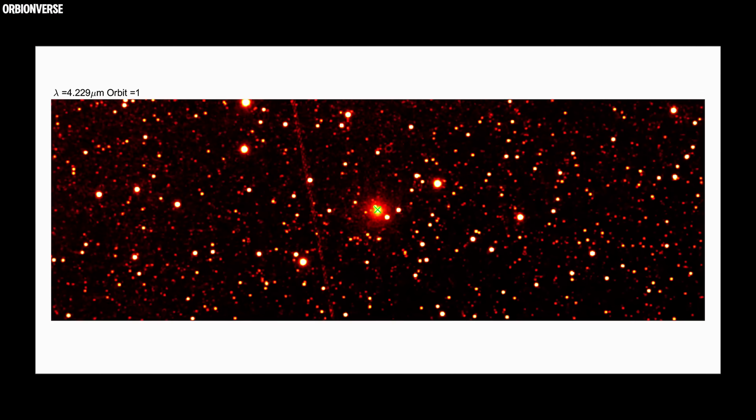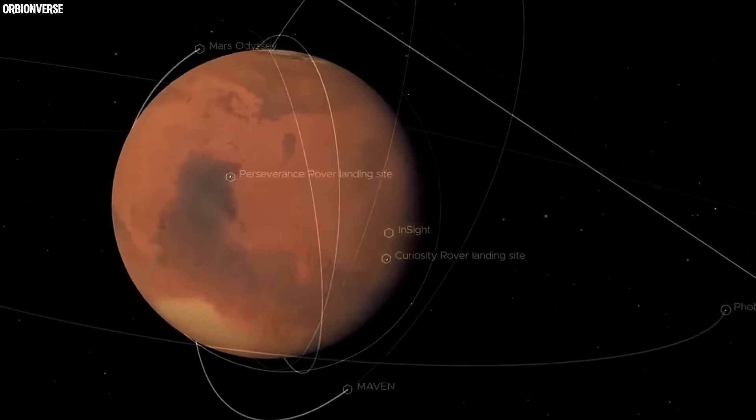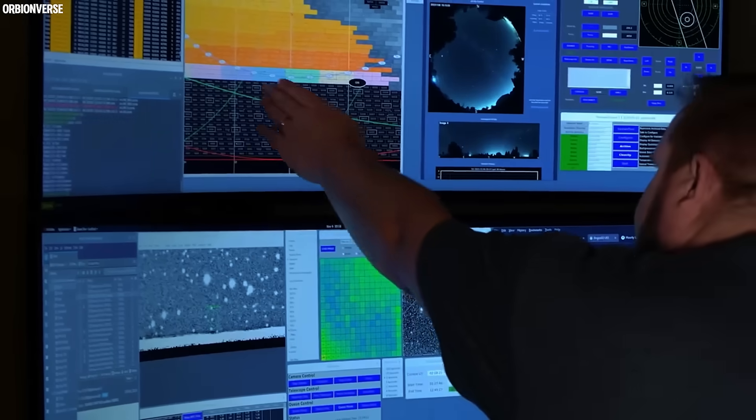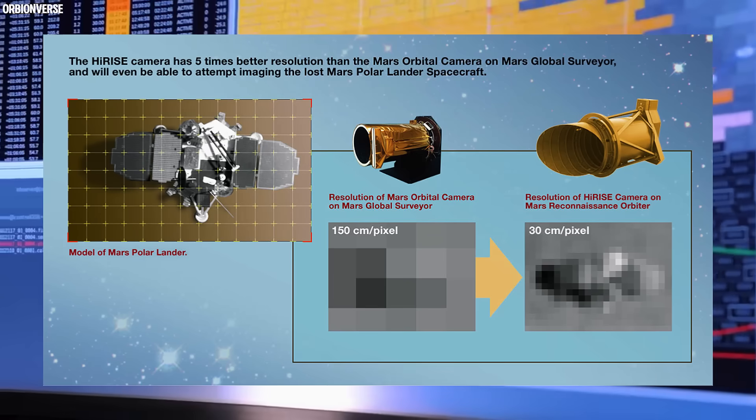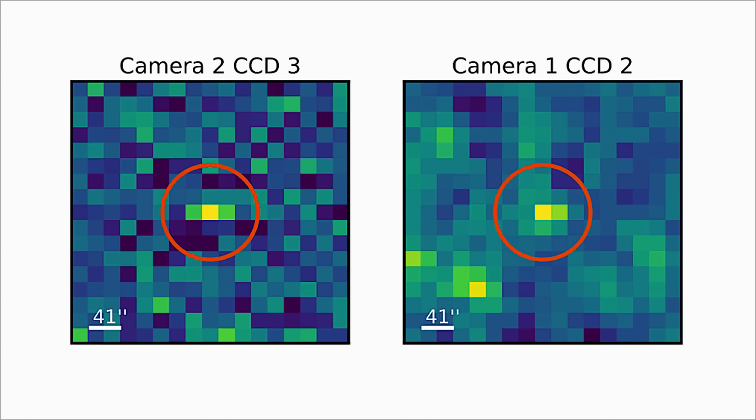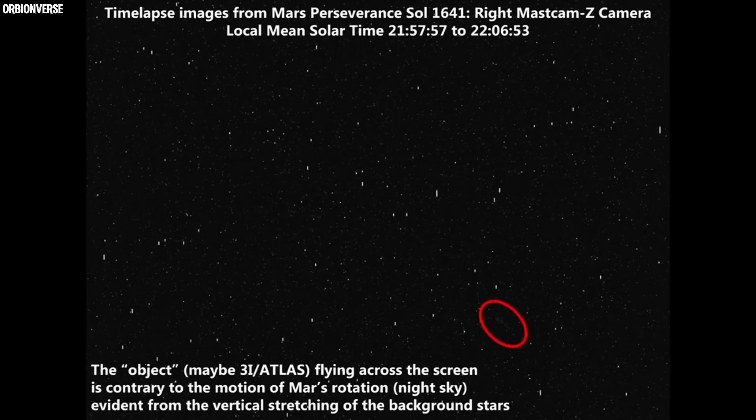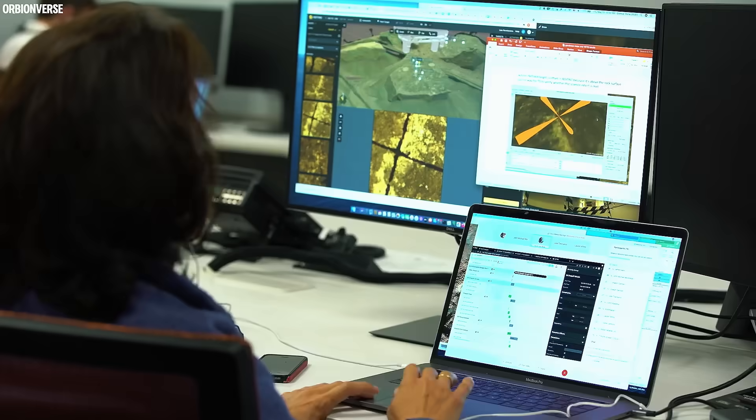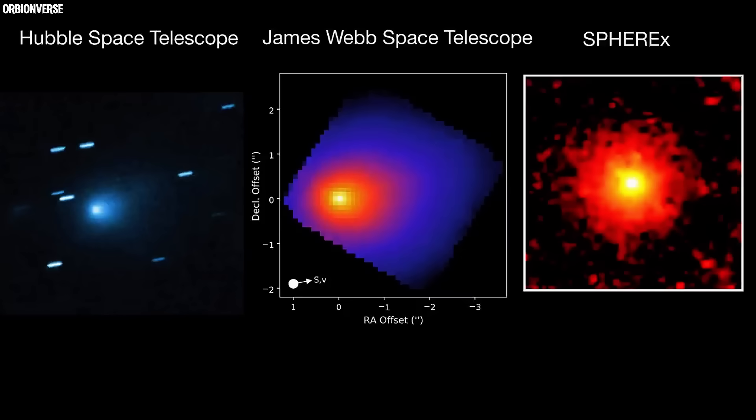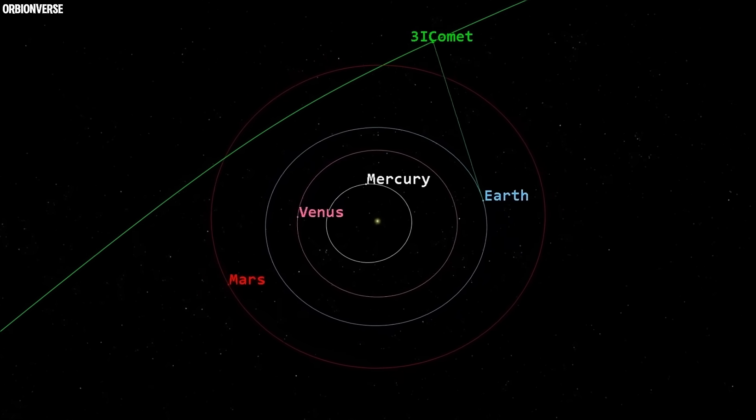And that's where things got even more compelling. Perseverance wasn't the only eye on the sky. In orbit around Mars, seven active spacecraft were also watching, including NASA's Mars Reconnaissance Orbiter and ESA's ExoMars Trace Gas Orbiter. But the real star among them was HiRISE, the high-resolution imaging science experiment camera aboard MRO. It had already captured data on 3I/ATLAS one day before Perseverance's sighting. Yet weeks later, those high-definition images remained unreleased. NASA confirmed they were under analysis but offered no public timeline. And in the silence that followed, speculation thrived. Why the delay? Were scientists simply verifying data? Or was there something more to this comet than the official report suggested?